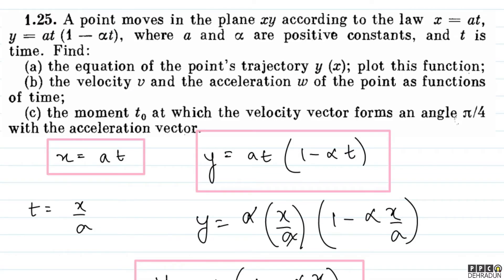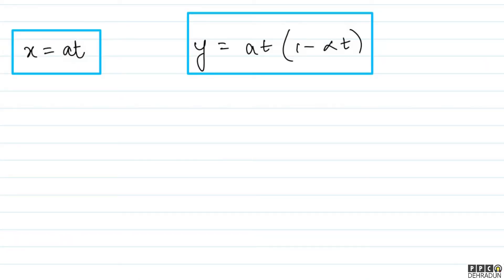Now let's move to the second part of the question: find the velocity V and acceleration W of the point as functions of time. Note that V and W are not in bold, so we need the magnitudes — not the vectors. We already have x = at and y = at(1 − αt).